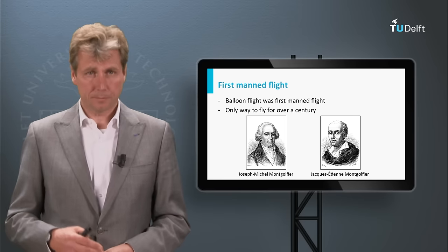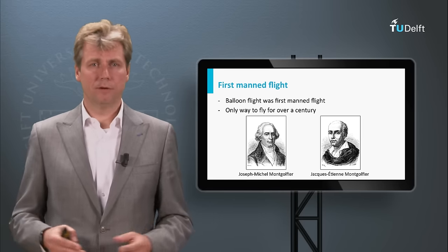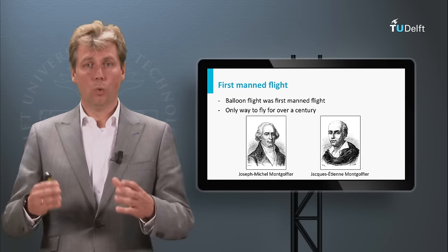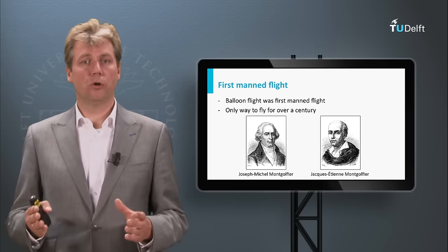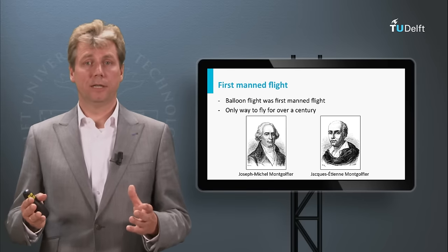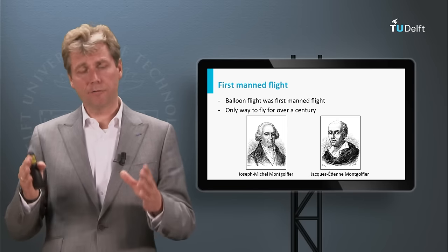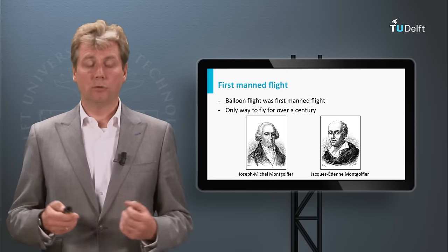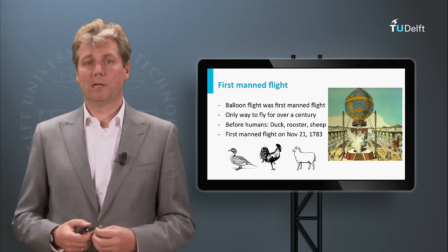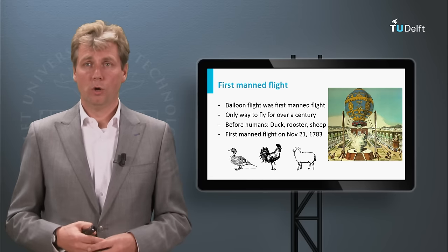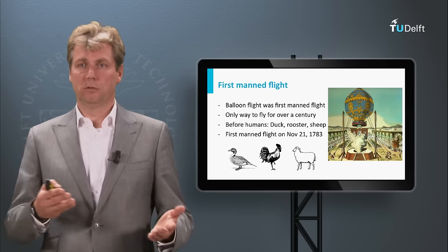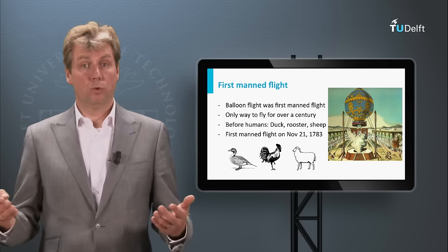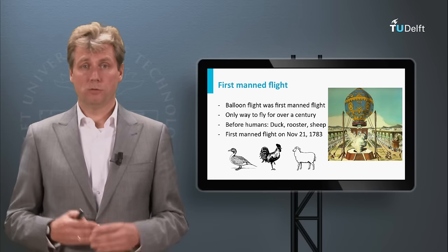Their father had a company in paper — wallpaper, if I am correct — and their first prototypes were indeed made of this wallpaper, indoors, and showed the principle that it was possible with hot air to fly, even though they themselves thought it was not hot air but some specific gas which came out of fire which was lighter than air. After these indoor experiments they increased the volume and had ever more outdoor experiments. And one example, which was really the one-but-last flight before they started achieving manned flight, was one where they used animals to experiment — a duck, a rooster, and a sheep, as you can see on the slide here. This was a demonstration where by now they were already drawing large crowds.